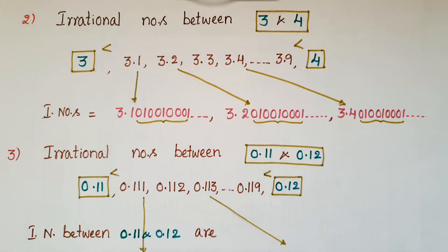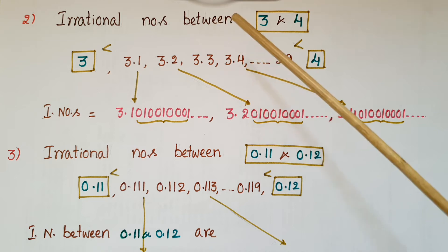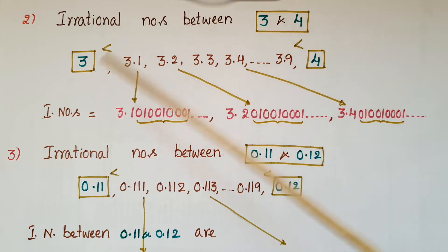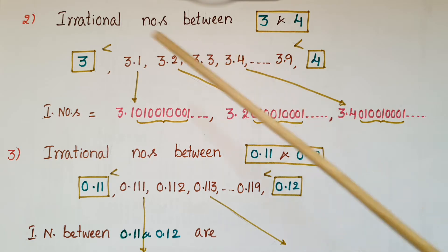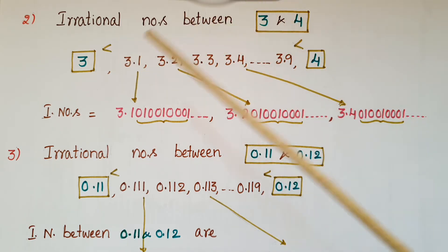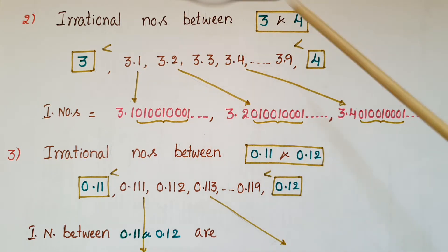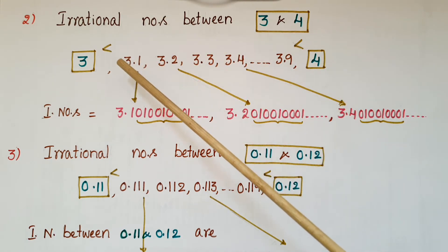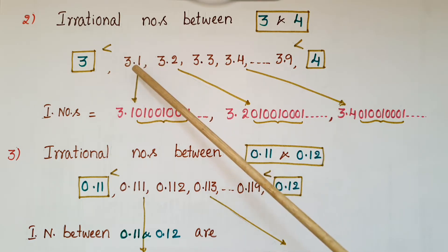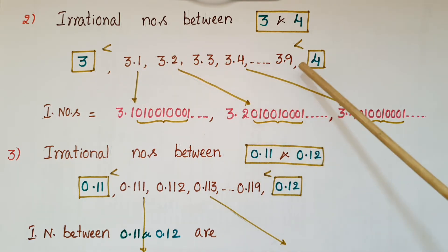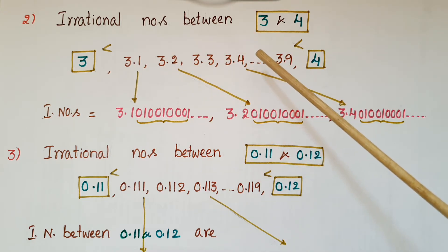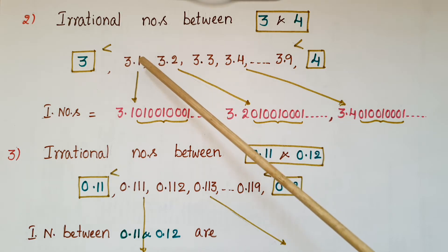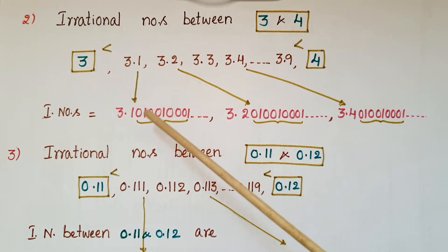Now I am going to tell how to find more irrational numbers between two numbers. For example, if we want to find irrational numbers between 3 and 4, the numbers must be greater than 3 and less than 4. We can write numbers like 3.1, 3.2, 3.3, 3.4, and so on till 3.9, but these are rational numbers, not irrational numbers.